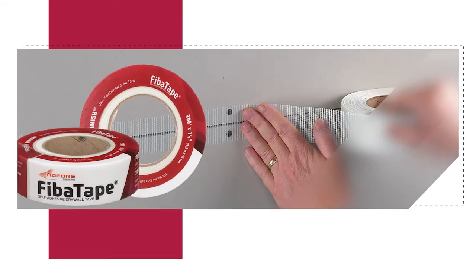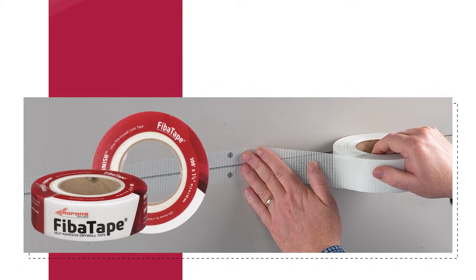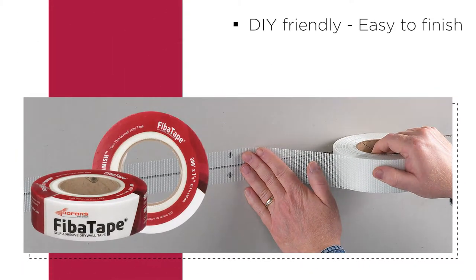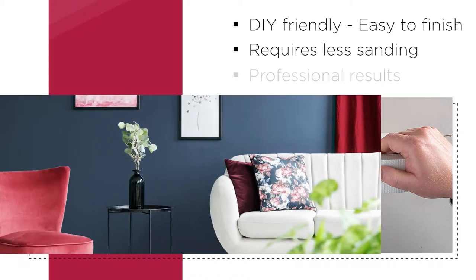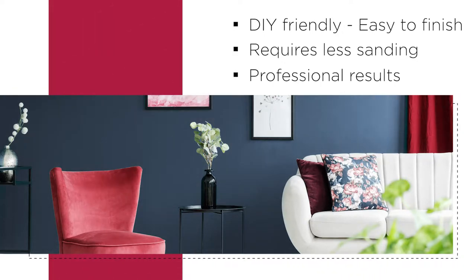Perfect finish, ultra-thin, self-adhesive fiberglass drywall tape is 33% thinner than standard mesh tape. The thinner profile requires less compound for a smooth seamless finish. It is also ideal for butt end joints or patch and repair.